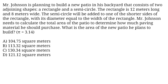Mr. Johnson is planning to build a new patio in his backyard that consists of two adjoining shapes: a rectangle and a semicircle. The rectangle is 12 meters long and 8 meters wide. The semicircle will be added to one of the shorter sides of the rectangle, with its diameter equal to the width of the rectangle. What is the area of the new patio he plans to build? Pi equals 3.14. A. 104.75 sq m. B. 113.32 sq m. C. 130.34 sq m. D. 121.12 sq m.